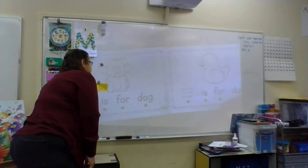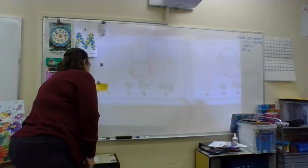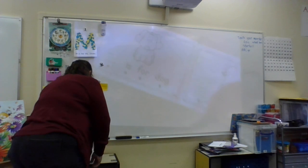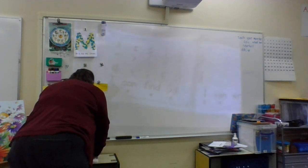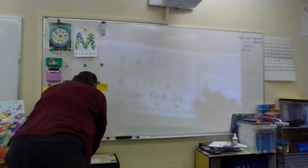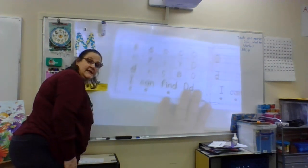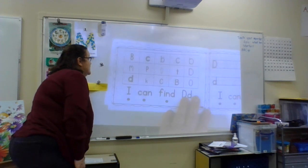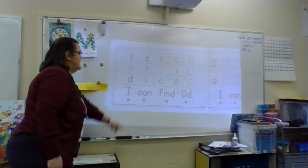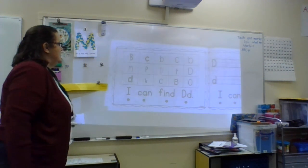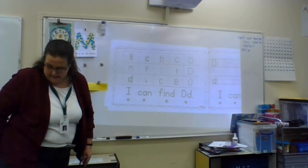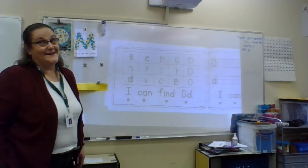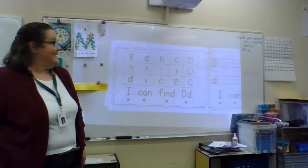Your job on these two pages is to trace and read the sentences. After you're all done reading the book twice, then you can go back and color the pictures. What are you going to do on this page? What's your job? You're getting good at being word detectives.